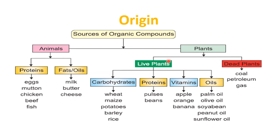Living plants will give you carbohydrates, proteins, vitamins and oils. The basic sources of carbohydrates are wheat, maize, potatoes, barley and rice. Pulses and beans are rich in protein. Apple, orange and banana will give you vitamins. Oil can be obtained from many plants like peanut oil, palm oil, olive oil, soya bean oil or sunflower oil.